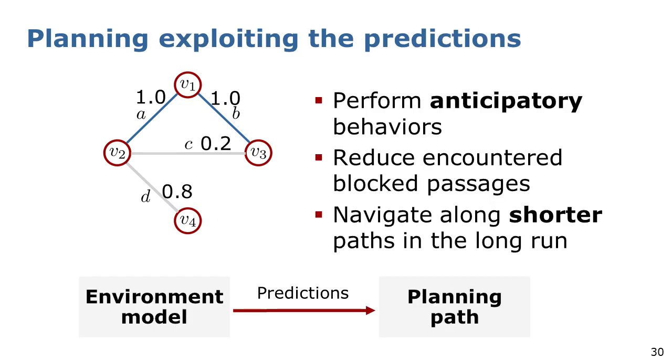Now that we have predictions on the edge traversability, we want to exploit this knowledge to plan paths that lead the robot to perform anticipatory behaviors that reduce the number of blocked passages encountered, and also to navigate along shorter paths in the long run.